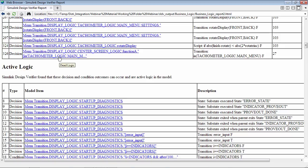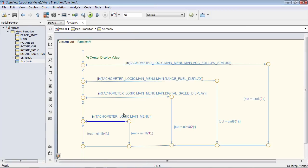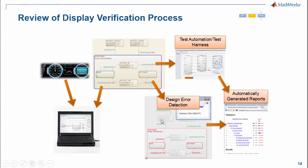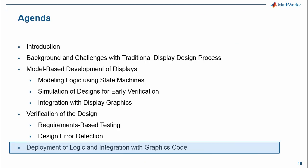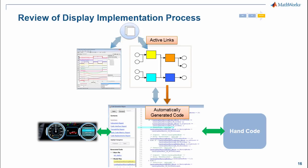Now that we've looked at how to design display systems inside of Simulink, verify the design against requirements, and use formal methods for verification, we can then take our Simulink diagram and easily generate code that integrates with both hand code and the graphics portion of our application. Inside of Simulink, we've also shown many automation processes that can be used, such as signal builder blocks to automate test cases. We've also shown the ability to have active links between your model and your requirement that will eventually go down to the code level.